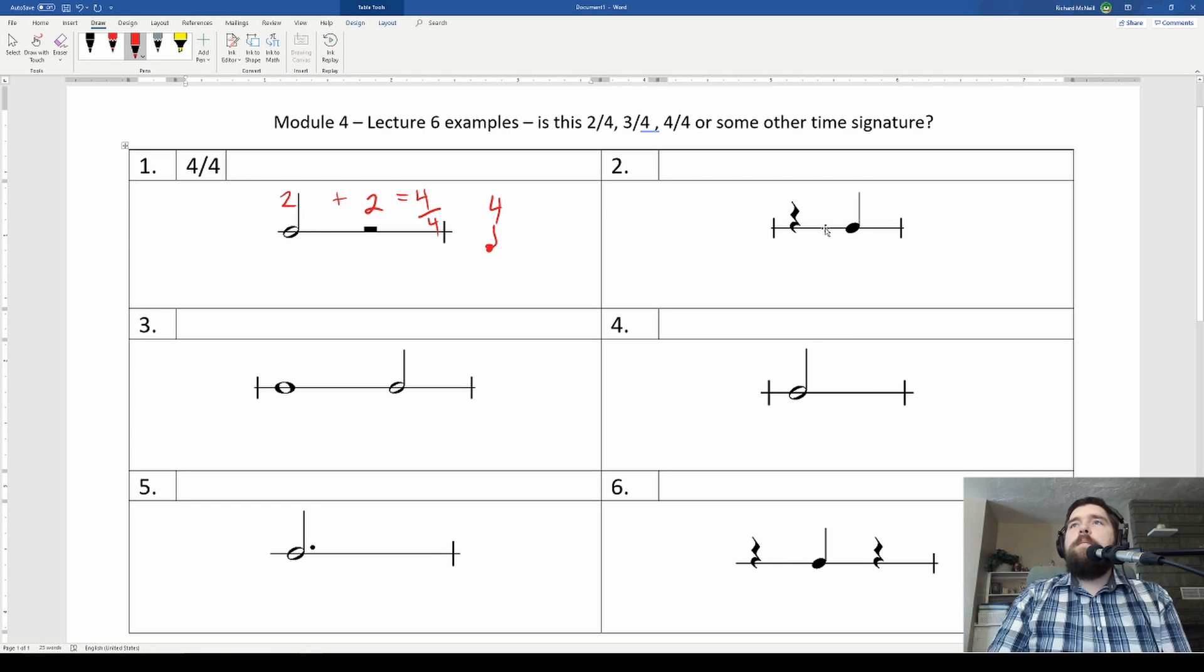Okay, what about this number 2 over here? What would our time signature here be? I take a look at what types of notes and rests we have. How many beats do they have? One beat, one beat. So that is a 2/4 time signature, because we have two beats.